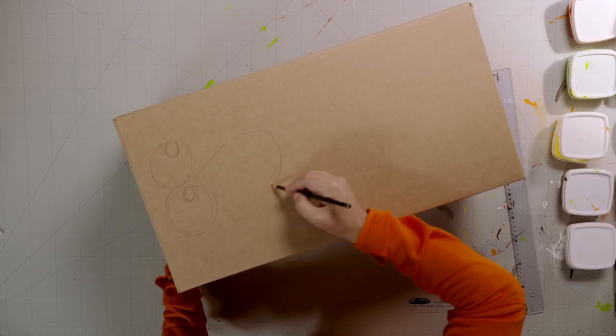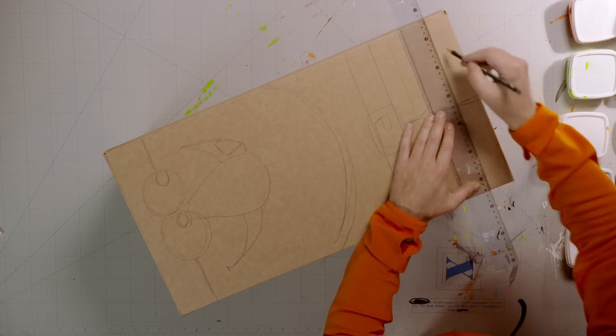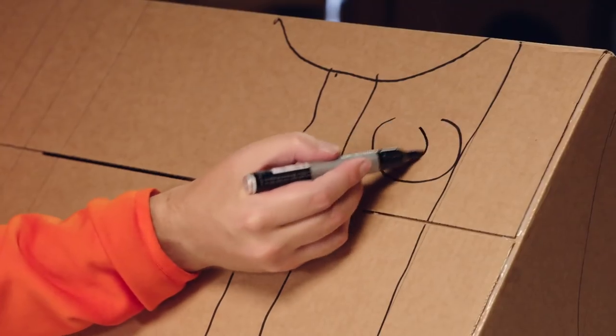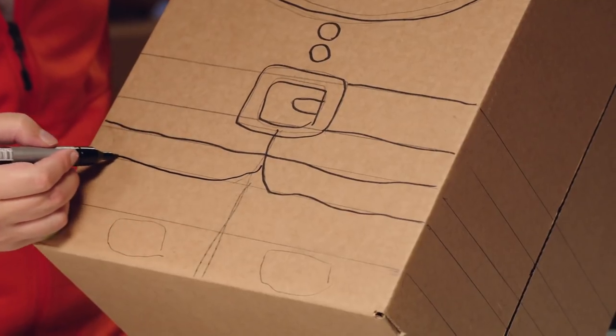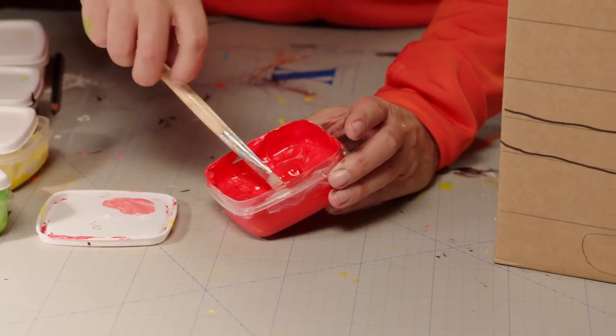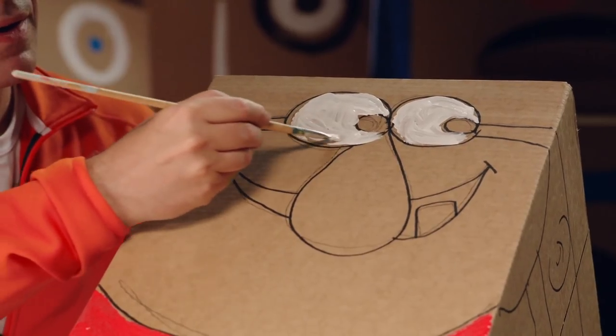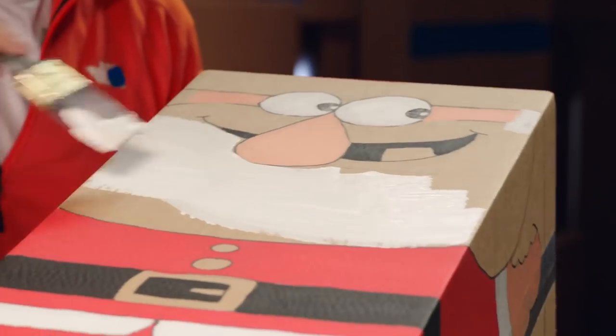First, draw Santa on the box one side at a time. First with pencil, then with a marker pen. Next, paint him with Santa colors. Red, white, black, pink and yellow.